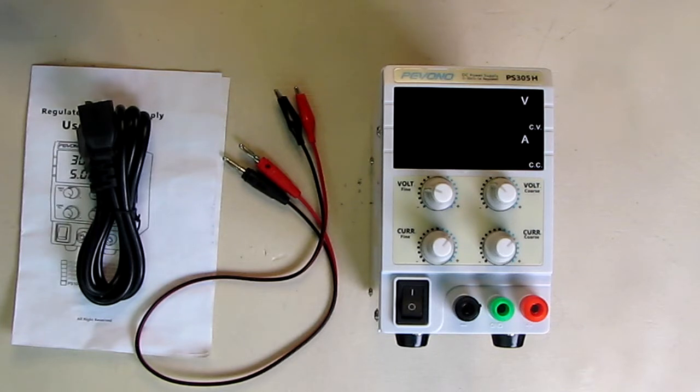The current regulation rate is 0.1 percent plus one milliamp. Load regulation rate is less than 0.2 percent at five milliamps, and at that rate, the rippling noise is five millivolts. It has short circuit protection, overload protection, and over temperature protection internally in this device.